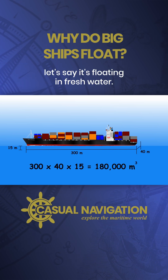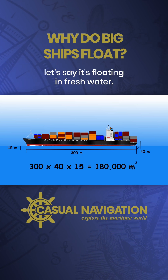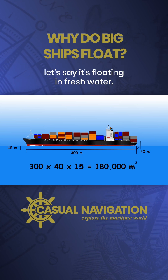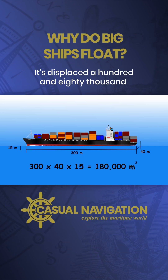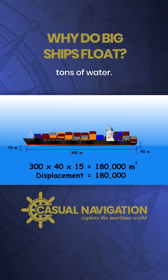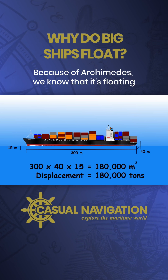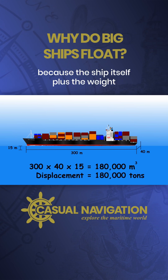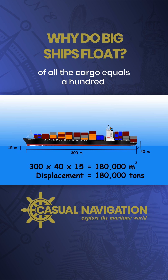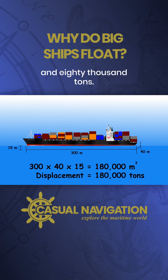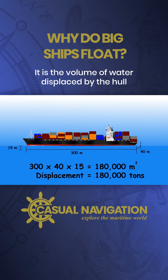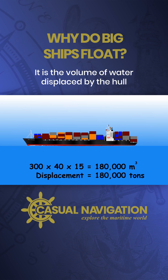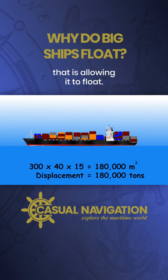As this is just an example, let's say it's floating in fresh water. It's displaced 180,000 tons of water. Because of Archimedes, we know that it's floating because the ship itself, plus the weight of all the cargo, equals 180,000 tons. It is the volume of water displaced by the hull that is allowing it to float.